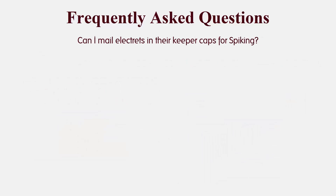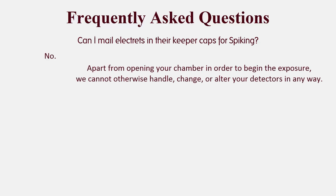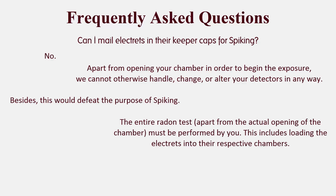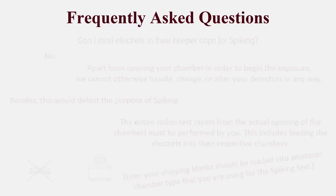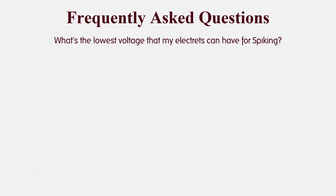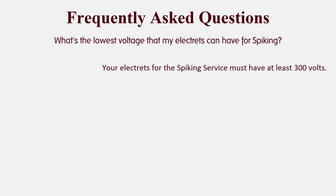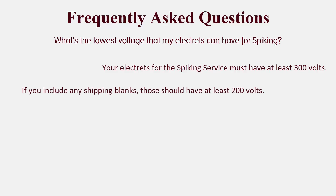Can I mail electrets in their keeper caps for spiking? The answer is no. Apart from opening your chamber in order to begin the exposure, Radelec cannot otherwise handle, change, or alter your detectors in any way. Besides, this defeats the purpose of spiking, which is to go through the entire process of performing a radon test — and this includes loading an electret into its chamber. Even your shipping blanks should be loaded into whatever chamber type you're using. What's the lowest voltage that my electrets can have for spiking? Electrets for the spiking service must have at least 300 volts. Furthermore, if you include any shipping blanks, those should have at least 200 volts.